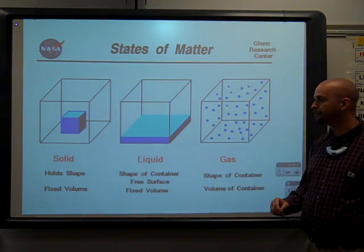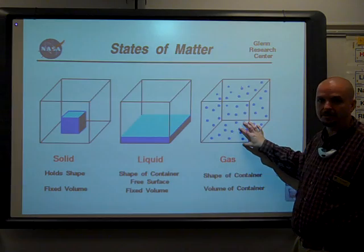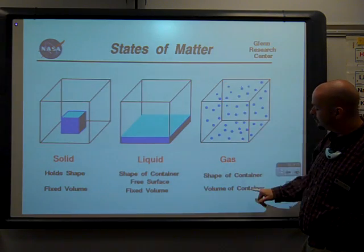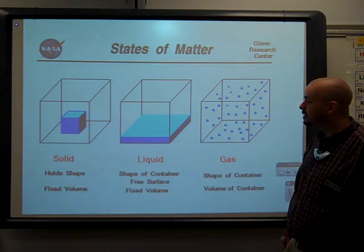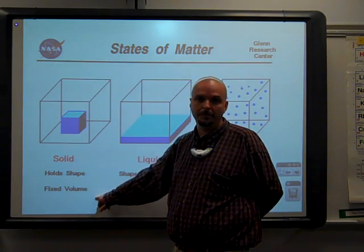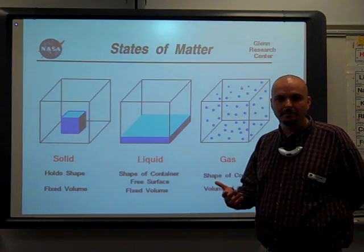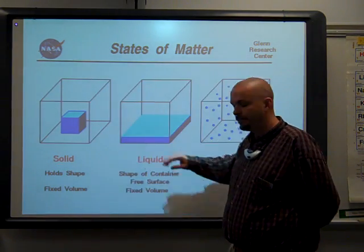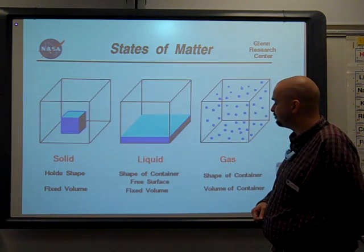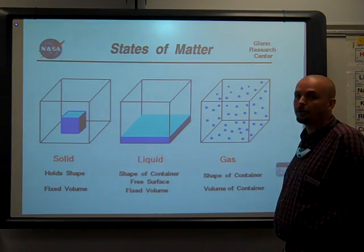Move over to the gas, and we see something very different. Again, we don't see that cube shape sitting inside the container. It's assumed the shape of its container again. But this time, rather than all sitting at the bottom, the particles have spread out to fill that container. They have assumed the volume of the container as well. A solid is defined as a substance with low kinetic energy that has both definite shape and volume. A liquid is defined as moderate kinetic energy, more so than solids, that has no shape of its own, that assumes the shape of its container, but still has definite volume. A gas is defined as a high energy substance that assumes both the shape and the volume of its container.